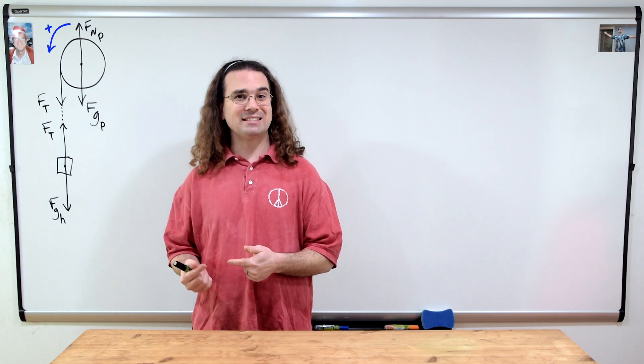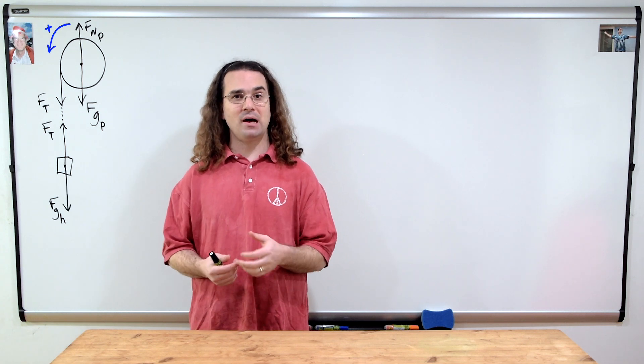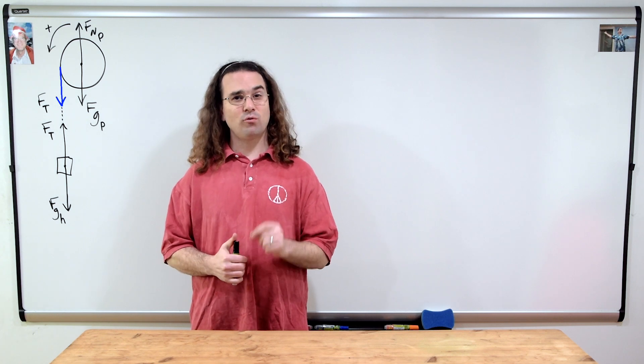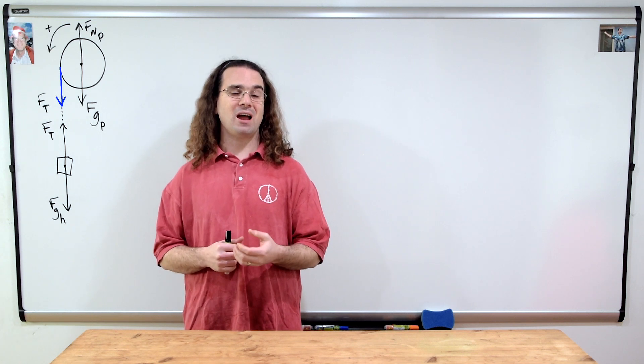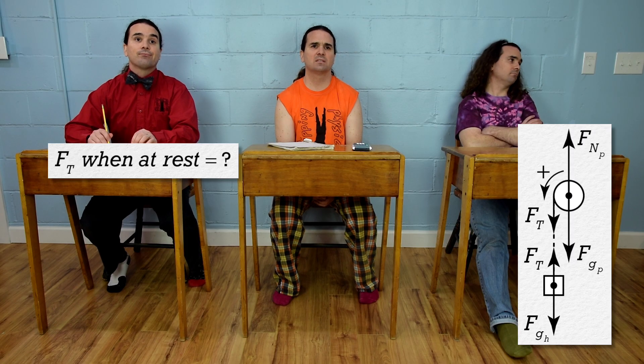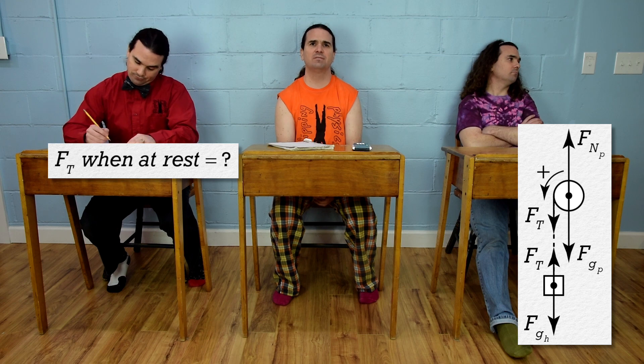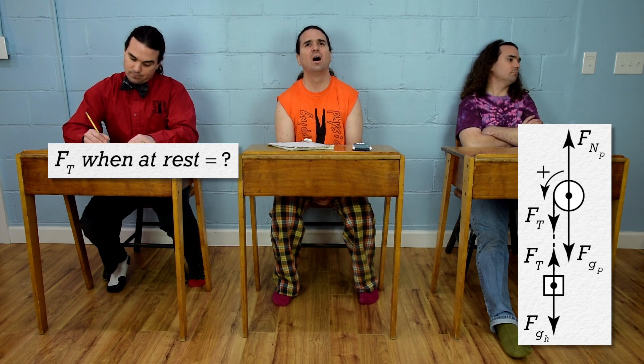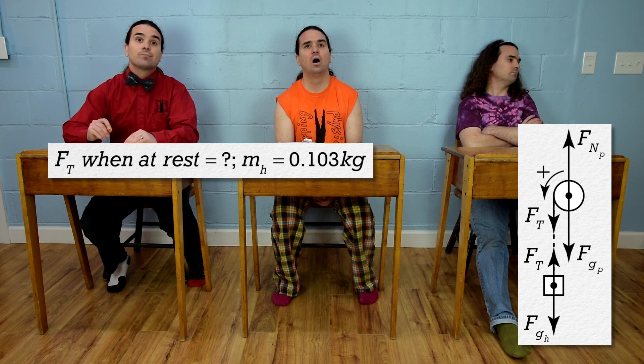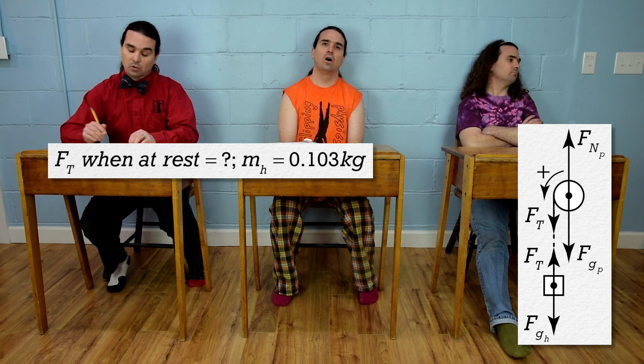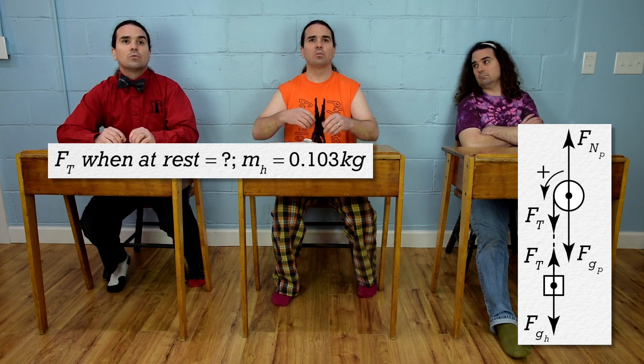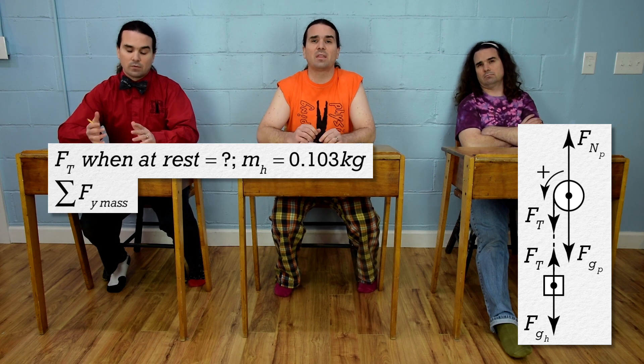Let's make counterclockwise or out of the board as the positive torque direction. Bobby, please determine what the force of tension should be before I let go of the pulley. Do we not need the mass of the hanging mass to solve for that? Oh, I'm sorry, right. The hanging mass in this example is 0.103 kilograms, which again includes the mass of the force sensor. Okay, thanks. Now that we know that, we can sum the forces in the y-direction acting on the hanging mass.